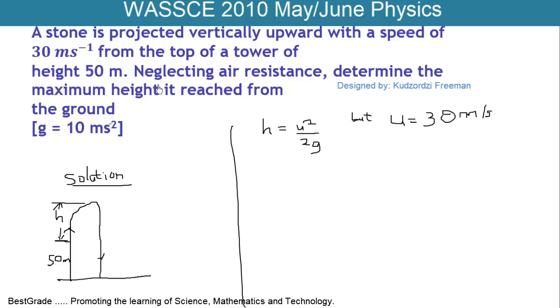And G is given as 10 meters per second squared.